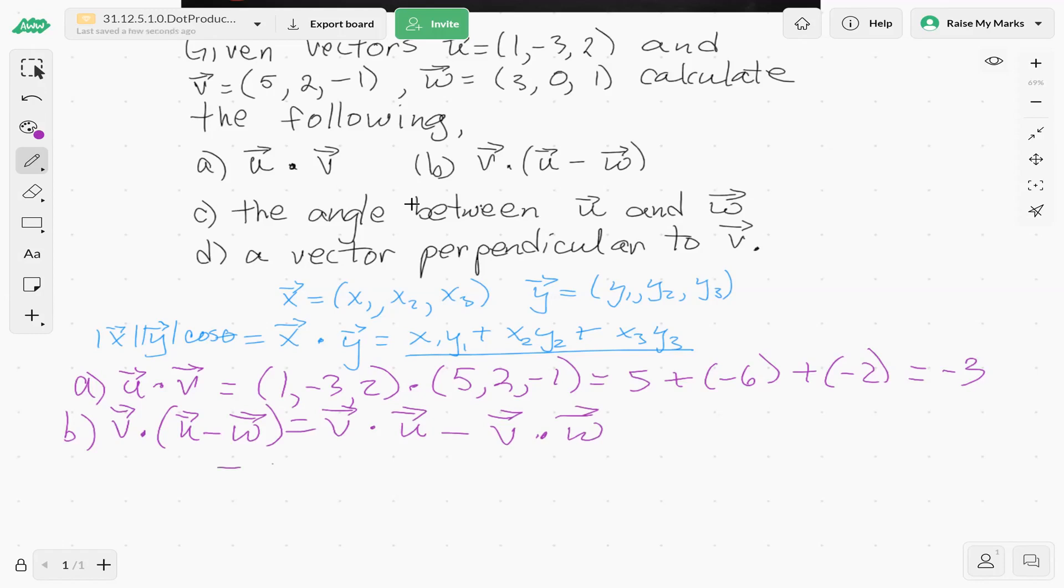All right, so v is (5,2,-1) dot. So v dot u is (1,-3,2) minus w, which is (3,0,1). Okay, we have (5,2,-1) dot...